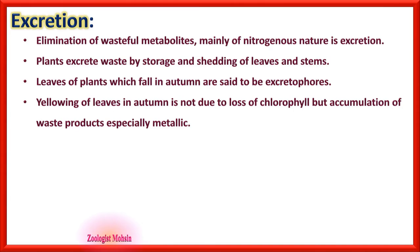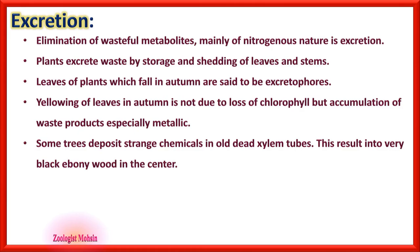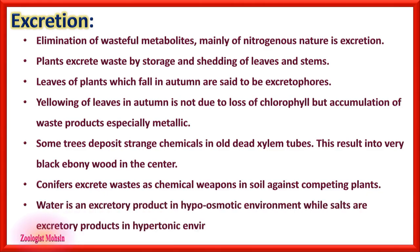Yellowing of leaves in autumn is not due to loss of chlorophyll, but due to accumulation of waste products, especially metallic waste. Studies show more yellow leaves have higher metal concentrations. Some trees deposit strange chemicals in old dead xylem tubes, resulting in very black ebony wood. Conifers excrete waste as chemical weapons in soil against competing plants.